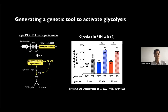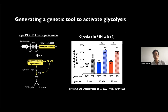To study the role of glycolysis, I first established a transgenic mouse line in which you can activate glycolysis in a genetic manner. The trick is we overexpress this dominant active form of PFKB3, which we call cyto-PFKB3. This enzyme activates the rate-limiting step of glycolysis, which is the PFK reaction, and this genetic trick was sufficient to increase glycolytic flux in PSM cells.